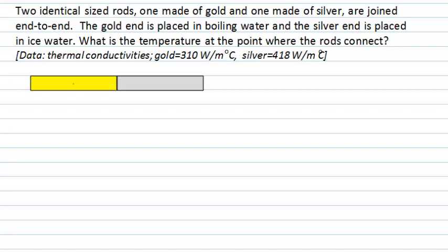In the diagram here we have the gold rod, which we'll indicate with the letter G, and the silver rod, which we'll indicate with the letter S, joined together.